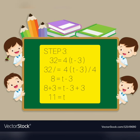32 divided by 4 equals 8. On the right side, 4 divided by 4 leaves us with (t minus 3). So the remaining equation is: 8 equals t minus 3. In order to get the exact value of t, we need to add 3 to both sides to cancel the unlike terms.